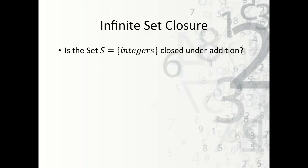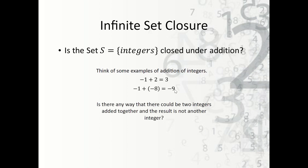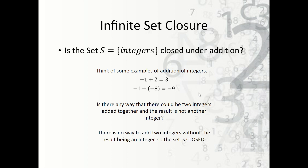Now let's look at the infinite set of integers and ask: is it closed under addition? Since we can't use a table, we think of examples and ask whether there's any way two integers can be added and not produce an integer. No matter which integers we add — including negatives — we always get another whole number. Therefore there is no way to add two integers without getting another integer, so the set is closed under addition.